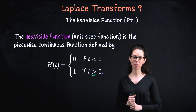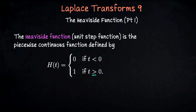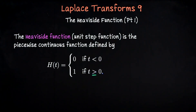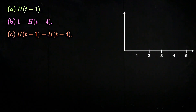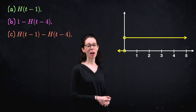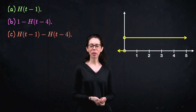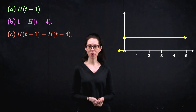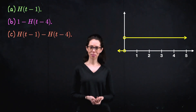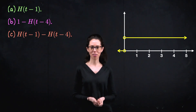Okay, let's see how we can shift this around in order to turn signals on and off. Over here we have a graph of your basic Heaviside function — just a jump discontinuity when time equals zero, jumping from zero on the left to one on the right. What we're going to do is three exercises where we plot variations of this Heaviside function.